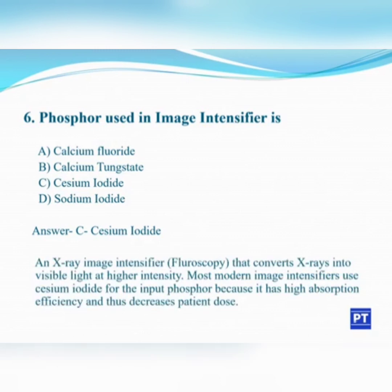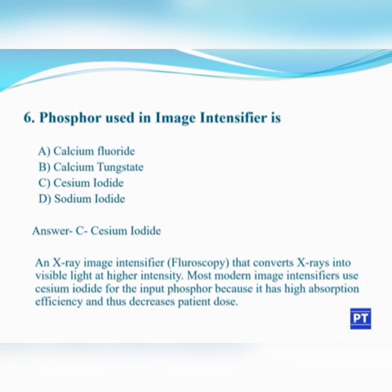An X-ray image intensifier, otherwise known as fluoroscopy, converts X-rays into visible light at higher intensity. The most modern image intensifiers use Cesium iodide for the input phosphor because it has high absorption efficiency and thus reduces the patient dose. The phosphor used in the image intensifier is therefore Cesium iodide.